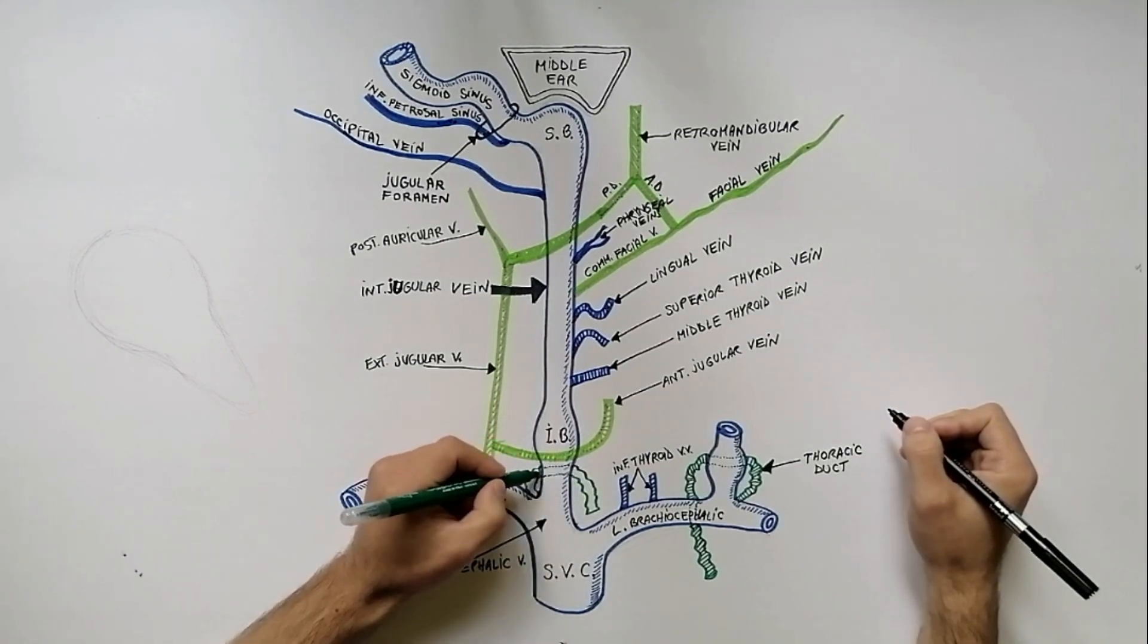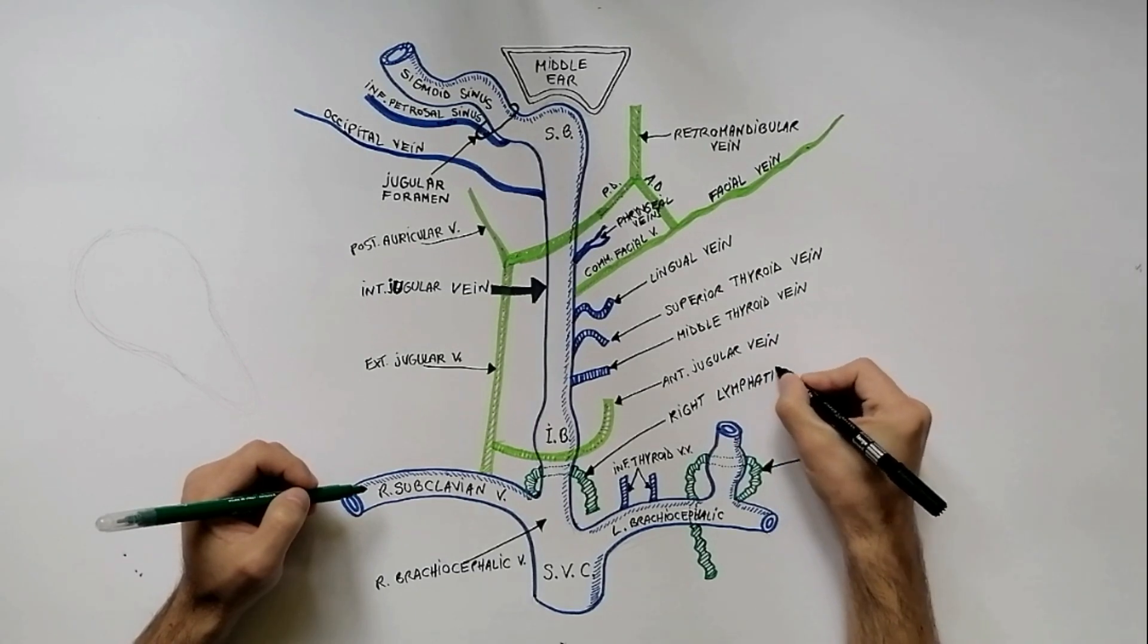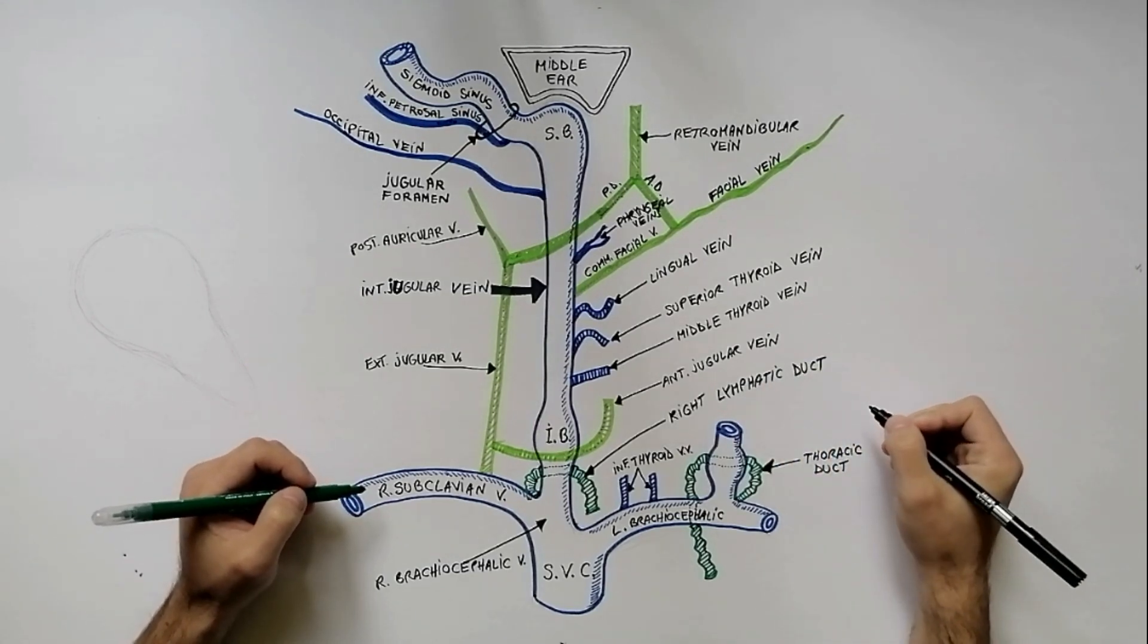On the right side, the right lymphatic duct drains to the junction of the right subclavian vein and right internal jugular vein.